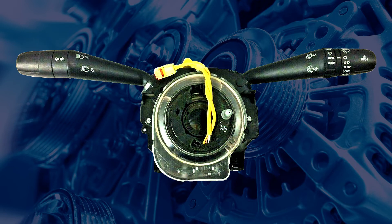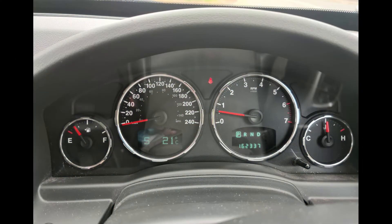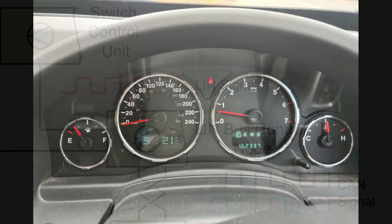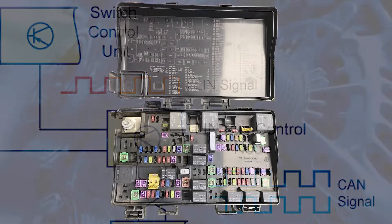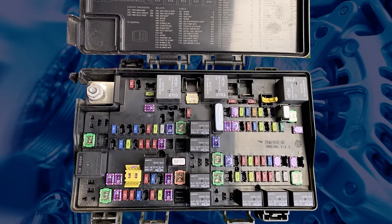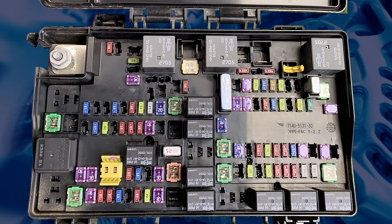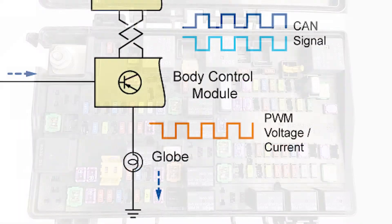The steering column control module will monitor the switch position, then send a LIN bus signal to the instrument cluster. The instrument cluster will then read this signal and convert it into a CAN bus signal and send it to the totally integrated power module. The totally integrated power module acts as a body control module, which could send a pulse width modulated voltage to the selected circuit to turn the lights on or to make them flash.